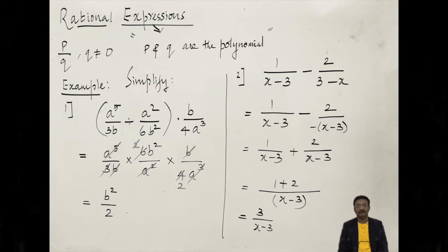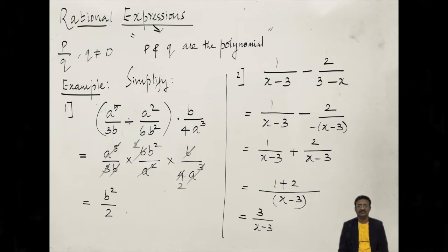Example 2: 1 upon x minus 3, minus 2 upon 3 minus x. I take the first rational form as it is: 1 upon x minus 3. For the second term I need the factor x minus 3, so I convert 3 minus x by taking out the negative sign to get negative(x minus 3). The LCM of these two rational expressions is x minus 3. So x minus 3 is the common factor; combining gives 1 plus 2 divided by x minus 3, which equals 3 divided by x minus 3.